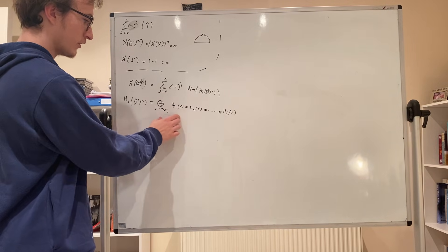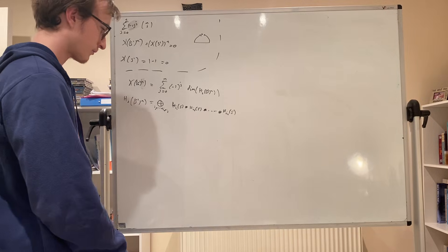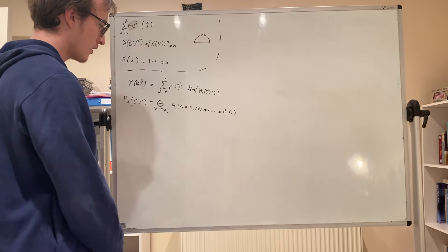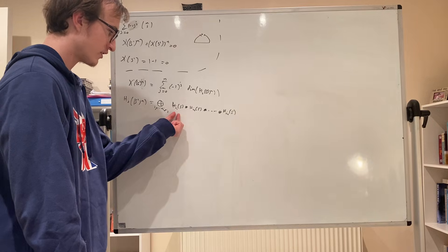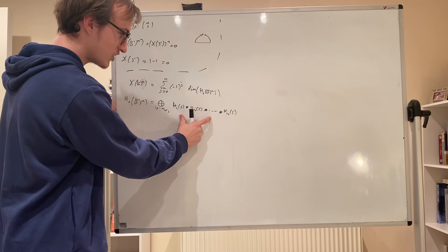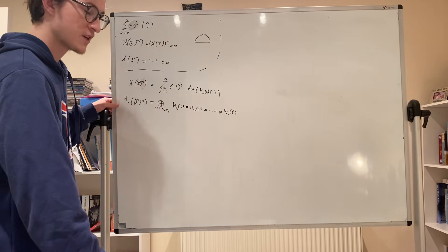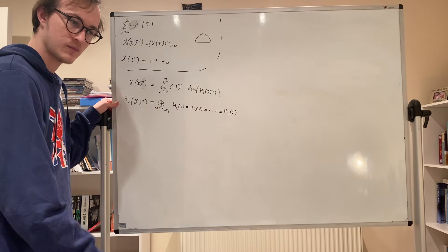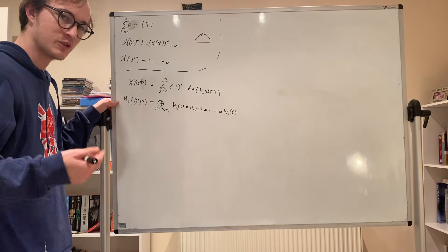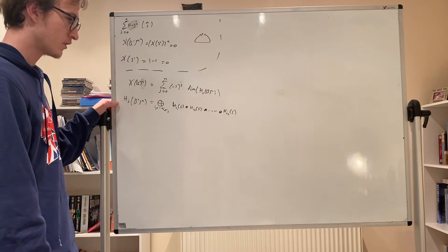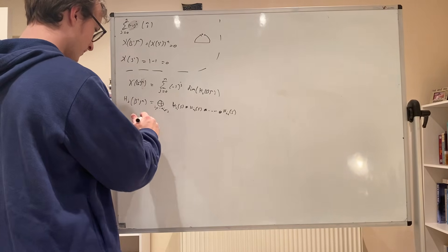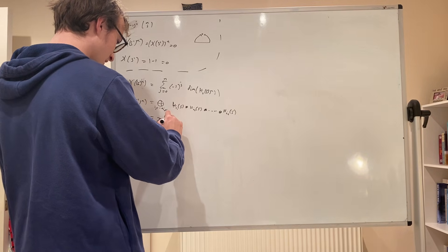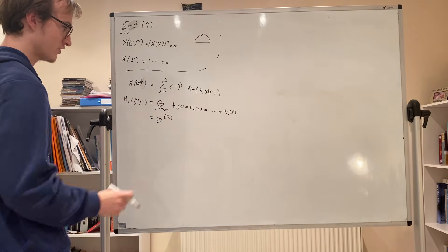When it's just ones and zeros we get a copy of the integers. So how many copies of the integers is this giving us? Well, since we're only allowed ones and zeros, we need for the jth cohomology exactly j ones and the rest are zeros. In other words, out of this set of n elements we need to pick j and make them one. So how many ways can we do that? n choose j. So this is precisely the integers direct summed with itself n choose j times, and so the dimension is just n choose j.